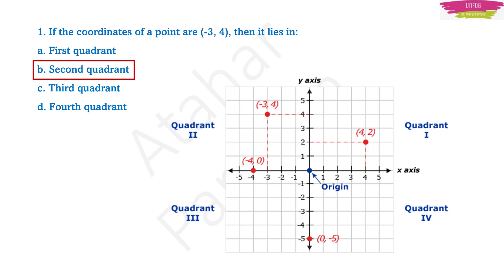I do not say that exactly this question will come with minus 3 comma 4. I am trying to make you understand what type of questions will come. Some question related to coordinate geometry in a simple manner like this will come. You should understand what is first quadrant, second quadrant, third and fourth quadrant. You should also know how to plot the graph in order to give the correct answer to this type of question.